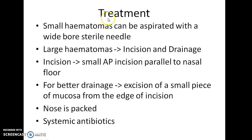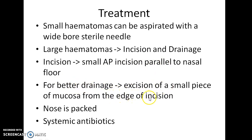How do you treat a case of nasal septal hematoma? Small hematomas can be aspirated with a wide-bore sterile needle. Large hematomas require incision and drainage. The incision is a small anteroposterior incision given parallel to the nasal floor. For better drainage, excision of a small piece of mucosa from the edge of the incision is necessary. The nose is packed to prevent reaccumulation, and systemic antibiotics are also given to the patient.